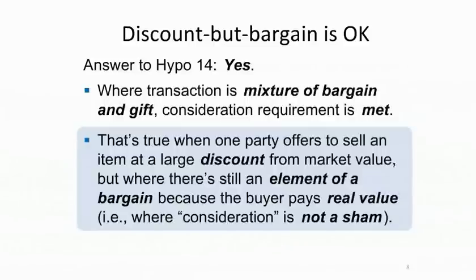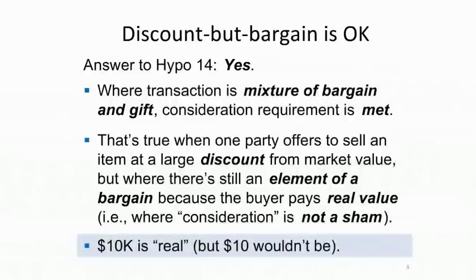For the consideration requirement in a discounted price scenario to be satisfied, it cannot be the case that the payment is a complete sham. A large discount won't block consideration, but the presence of sham or completely nominal so-called consideration may indicate that in reality there is no bargain at all, in which case the promise will be unenforceable. The $10,000 that nephew promises to pay is real money — not so tiny that a court would conclude this is a pure gift rather than a mixed bargain and gift. Uncle has exchanged his promise for Nephew's promise of real payment, making Uncle's promise enforceable.